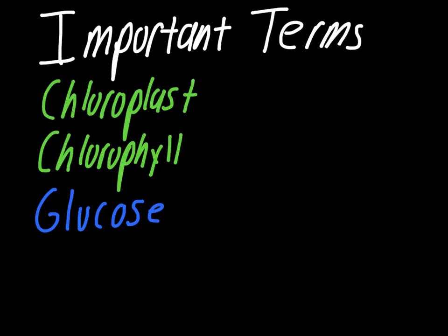A few important terms to recap everything. The chloroplast is something we've talked about in the past — that's the organelle where the process of photosynthesis takes place. We'll talk about things like the stroma and other structures where the actual process of photosynthesis is happening.